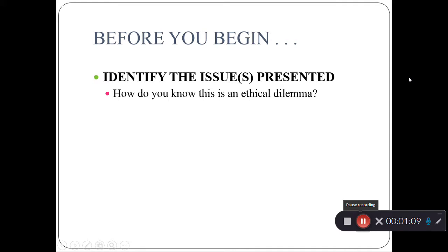Before we get into the steps of the decision-making framework, I want you to first take a step back when you have a problem, when you're addressing an ethical dilemma, and identify the issue or issues presented. How do you know you may have a problem? How do you know you're going to have to address an ethical dilemma? What about it makes you feel uncomfortable? What can you see from an overall perspective that leads you to believe you need to solve a problem?